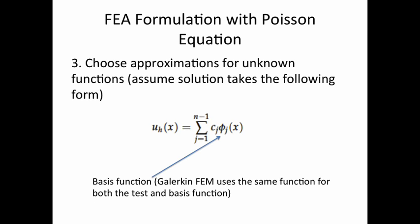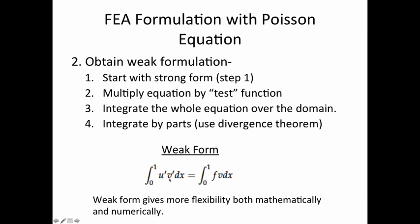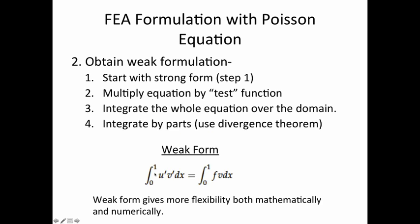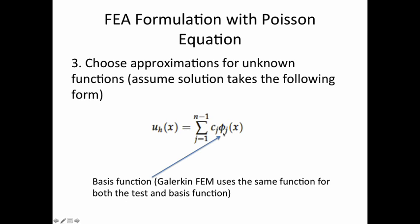For step three, you choose approximations for the unknown functions. We assume the solution takes the form u(x) = sum of c_j times phi_j, where phi_j is the basis function. In the Galerkin finite element method, which I'm using, the same function is used for both the test function and the basis function. So the test function v uses the same phi that's used as the basis function in the solution.